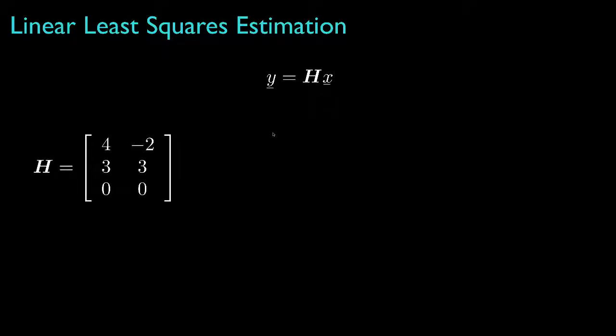As an example, suppose that the observation matrix is 3 by 2, so that the observation has 3 elements and the parameter has 2. The observation space then might be represented as the standard three-dimensional space, where the first column of the observation matrix is the vector 4, 3, 0 as shown here, and the second column negative 2, 3, 0 is shown here.